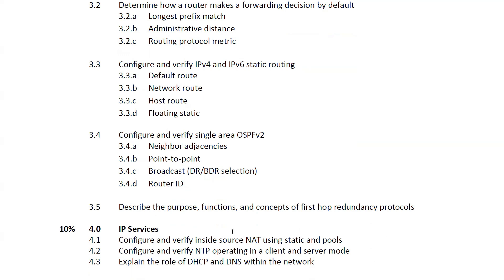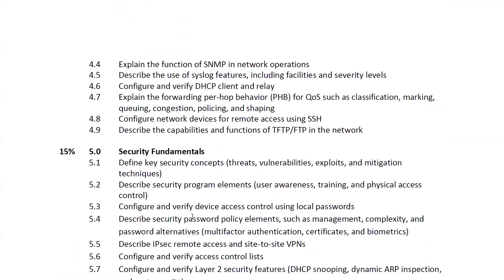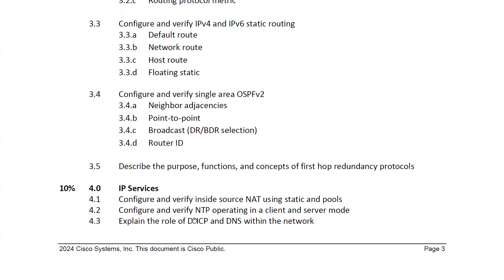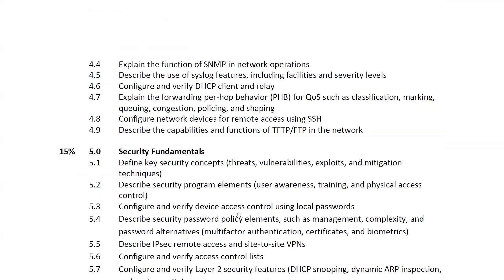IP services covers NAT, NTP, DHCP, DNS, SNMP, Syslog, and DHCP client and relay. You'll also need to understand QoS terms like classification, marking, queuing, congestion, policing, and shaping. Additionally, you'll learn how to configure network devices for remote access, covering both Telnet and SSH, as well as the capabilities and functions of FTP and SFTP.